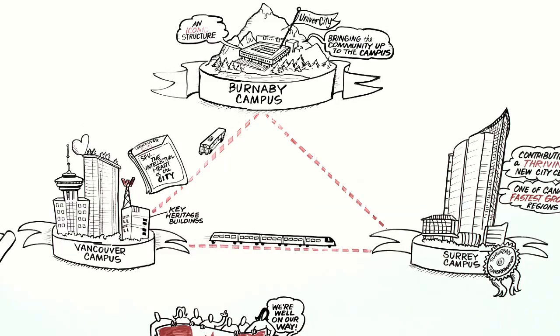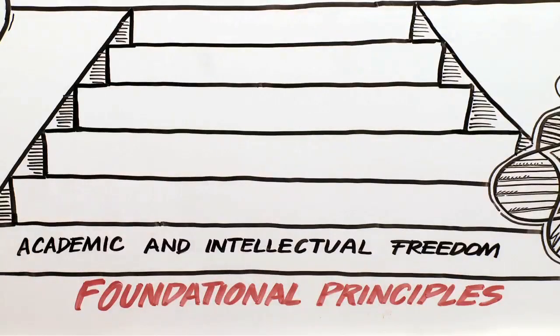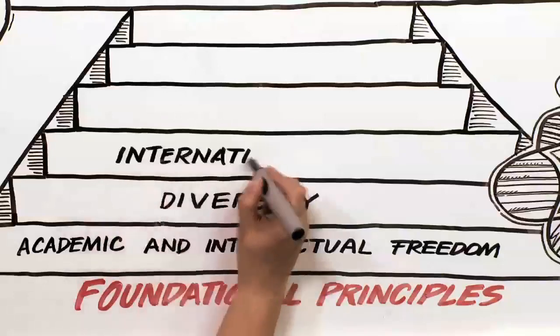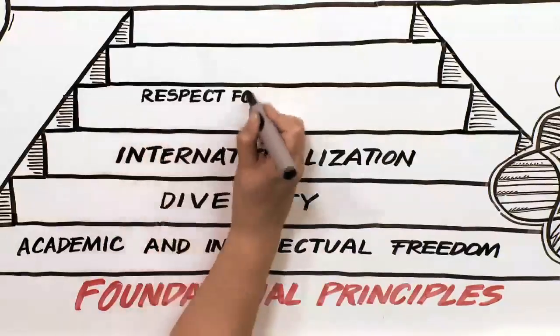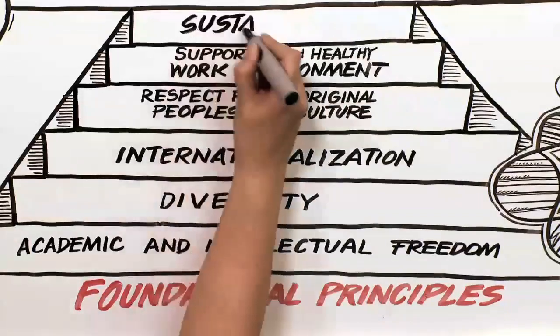This fusion of university and community is essential to our vision of an engaged university. Other foundational principles that strengthen and support the vision are academic and intellectual freedom, diversity, internationalization, respect for Aboriginal peoples and cultures, a supportive and healthy work environment, and sustainability.